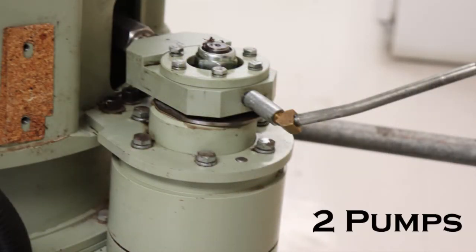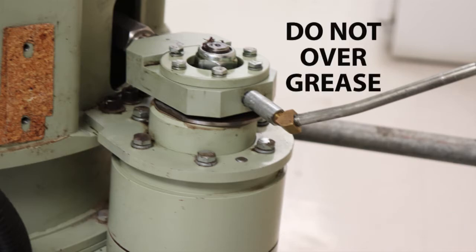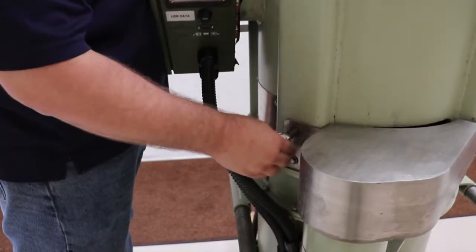Grease these areas with two pumps of grease. Do not over grease this area. Replace the front and rear actuator arm covers.